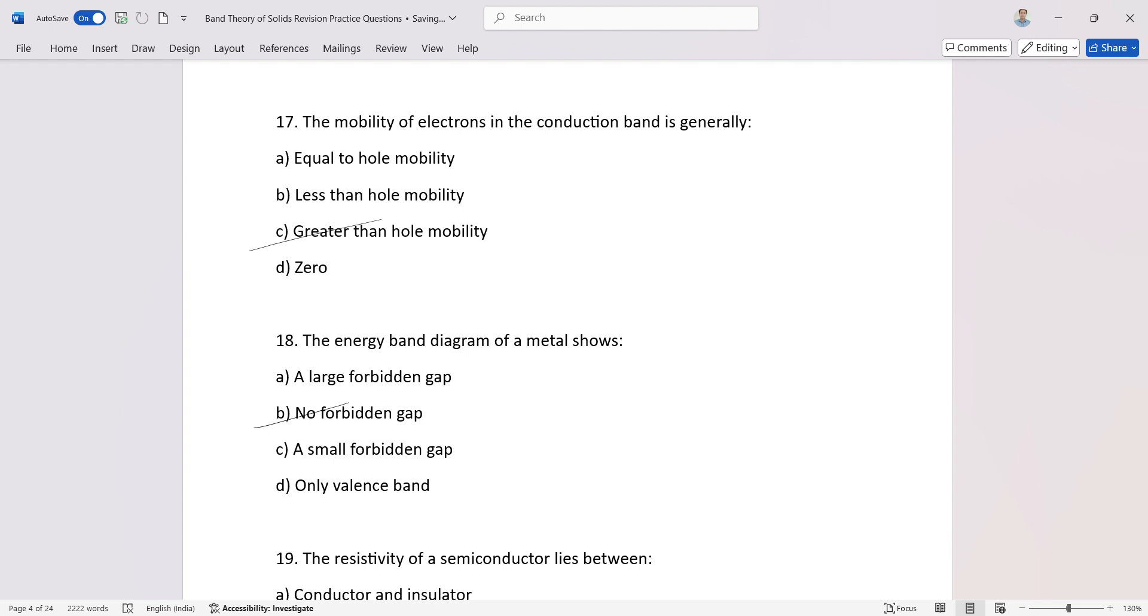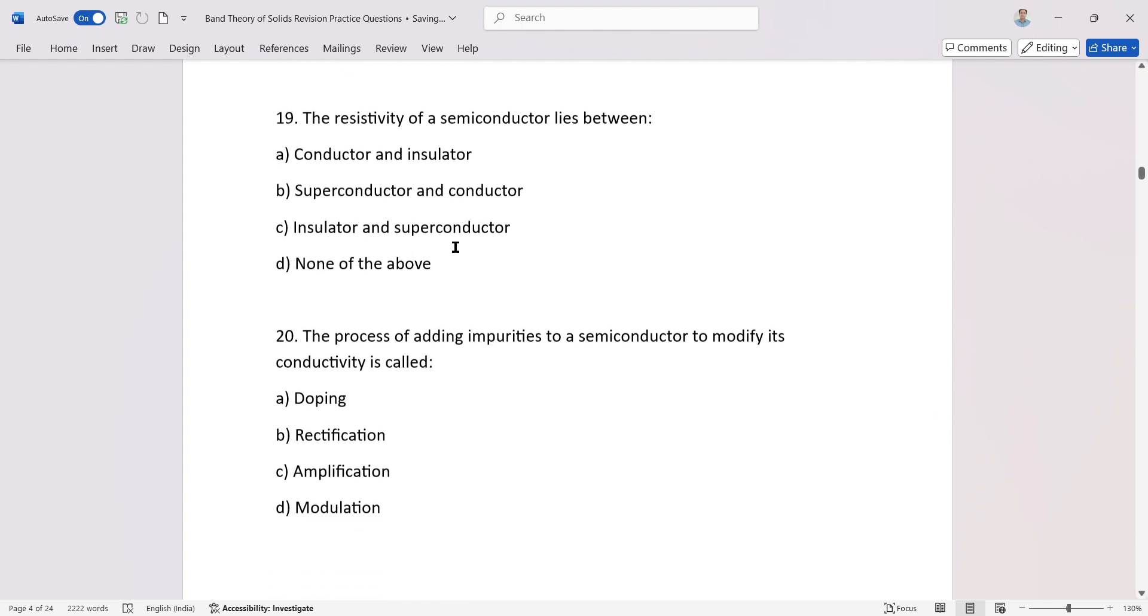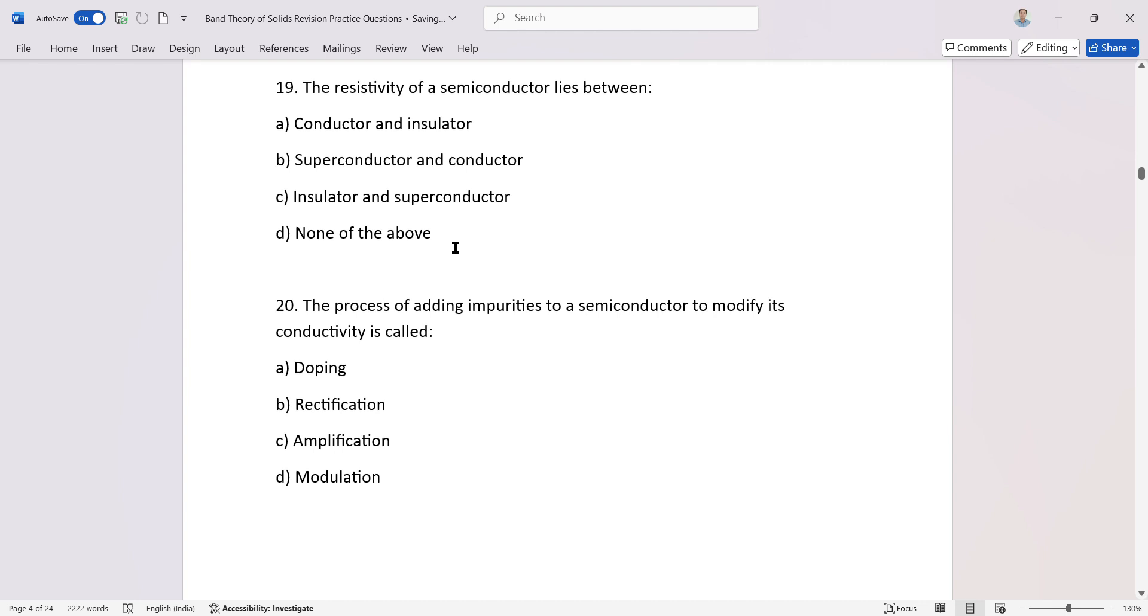Why is it? The valence band and conduction band overlap in metals. The resistivity of a semiconductor lies between conductors and insulators. The process of adding impurities to a semiconductor to modify its conductivity is called doping.